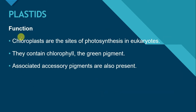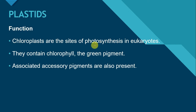Chloroplasts are the sites of photosynthesis in eukaryotes. They contain chlorophyll, which is the green color pigment, and associated accessory pigments are also present here. Chlorophyll captures sunlight. Photosynthesis is a process in which plants use sunlight to prepare their food — utilizing carbon dioxide and water in the presence of sunlight to produce glucose. That's why chlorophyll is a very important pigment for performing photosynthesis.